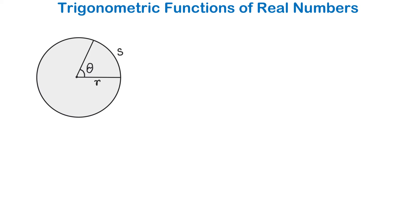To understand the trigonometric functions of real numbers, first we will review the formula for the lengths of a circular arc. If we have a circle of radius R and a central angle theta expressed in radians, then we can find the length of the arc intercepted by this angle using the formula S equals R multiplied by theta. If we know the radius and theta in radians, we find arc length S by multiplying them together.